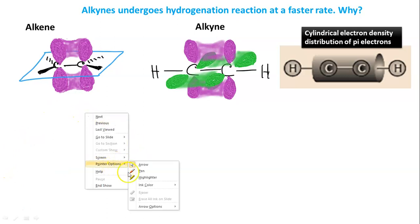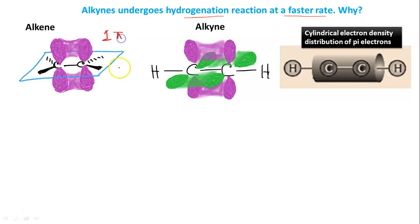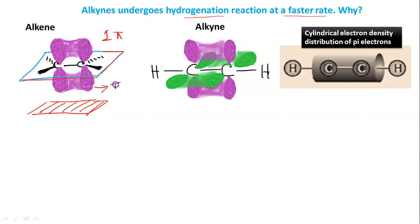Here we will compare the reactivity of alkyne and alkene. Alkyne undergoes hydrogenation reaction at a faster rate. To find the reason, we first need to know the pi orbital in case of alkene. In the case of alkene, there is one pi bond and that pi bond is perpendicular to the molecular plane. When the approach with the metal surface is parallel to the molecular plane, only then a fruitful reaction is possible.